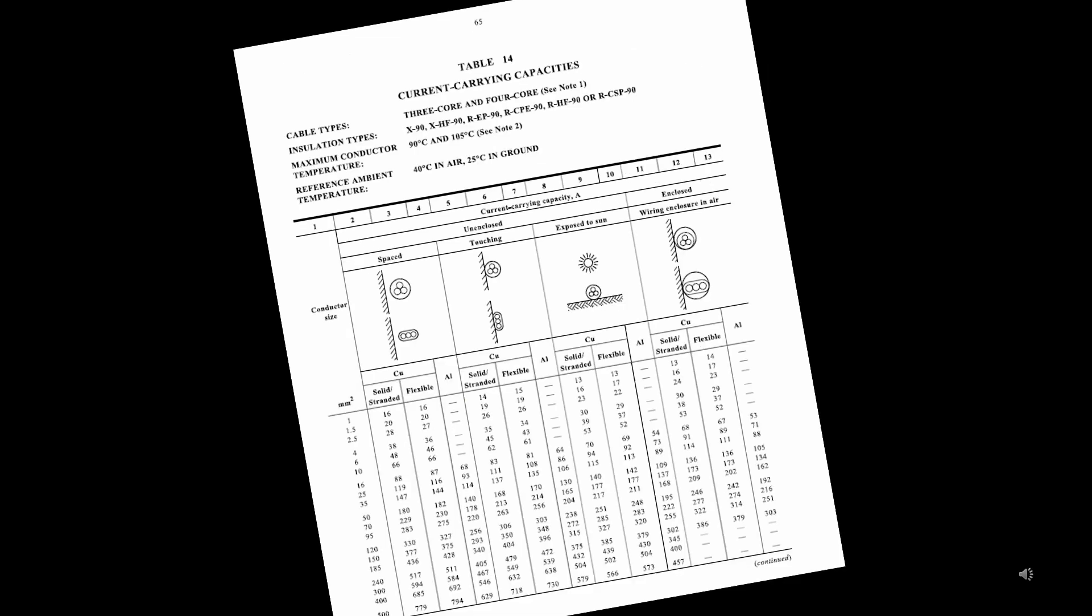Table 14 deals with cables with a higher conductor temperature. Anything up to 90 degrees. So, here's that symbol that we found in Table 3. So, we can run down this column until we find a 16mm cable. And we find that it's good for 88 amps.